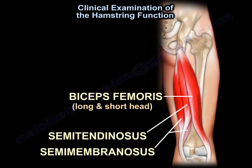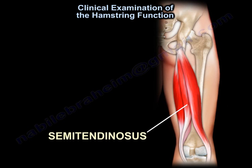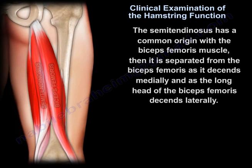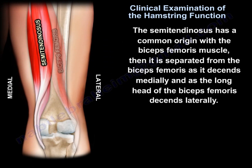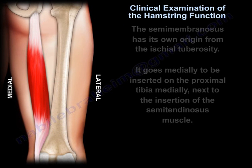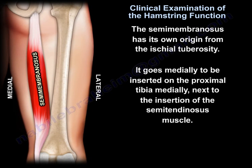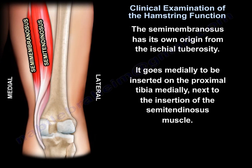Another hamstring muscle is the semi-tendinosus, which has a common origin with the biceps femoris. It is then separated from the biceps femoris as it descends medially, while the biceps long head descends laterally. The semi-membranosus has its own origin from the ischial tuberosity and goes medially to be inserted on the proximal tibia medially, next to the insertion of the semi-tendinosus.